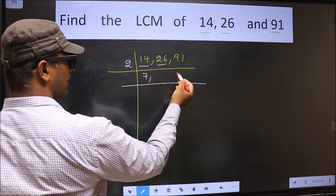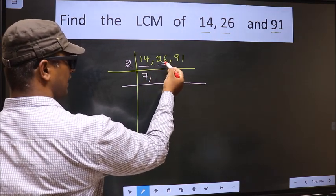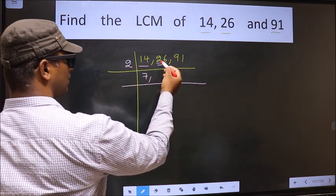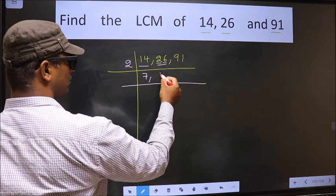Now the other number 26, last digit 6, even. So this number is divisible by 2. First number 2, when do we get 2 in 2 table? 2 times 1 is 2.